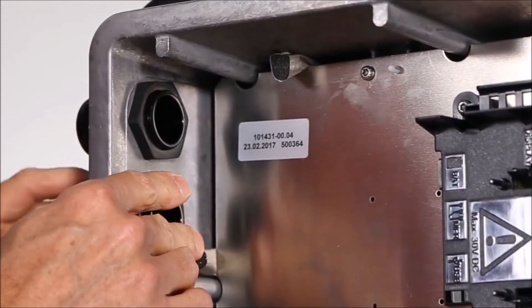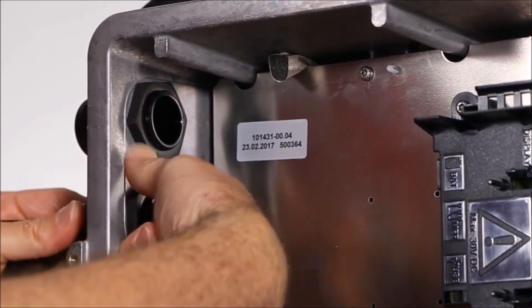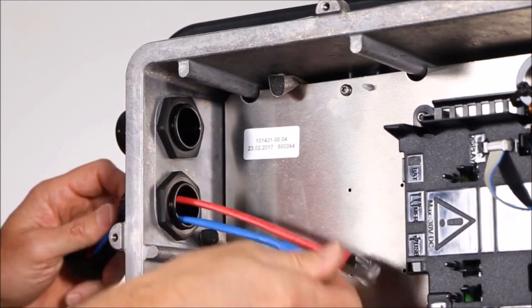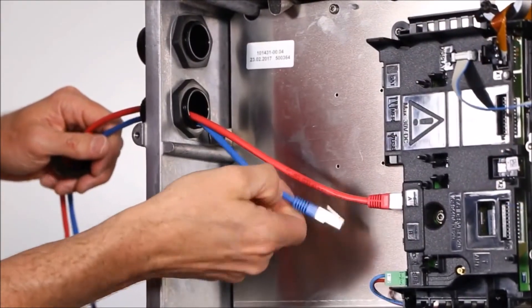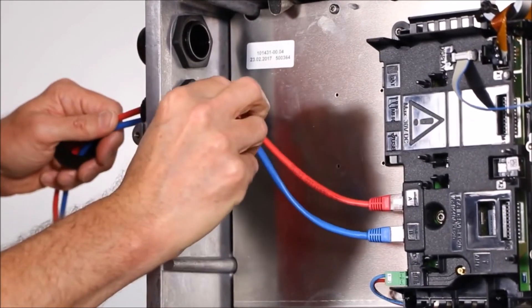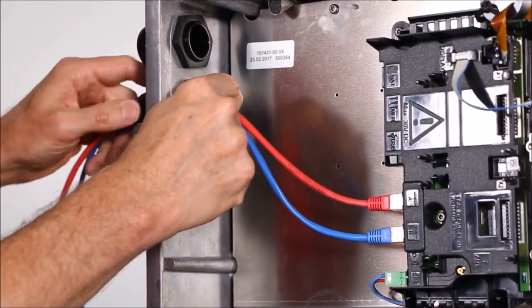For the communications, we bring the ethernet cable through one of the one-inch openings and connect it to one of the RJ45 ports on the communications board. Multiple inverter communication boards can be daisy-chained together using the second RJ45 port. When daisy-chaining, the ethernet cables can be up to 100 meters in length.